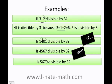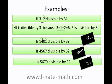Is 5,679 divisible by 3? Just add 5 plus 6 plus 7 plus 9. 5 plus 6 is 11, 11 plus 7 is 18, and 18 plus 9 is 27. Therefore yes, it's divisible by 3.